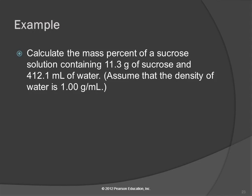So this is the sort of question that involves that particular trick. Calculate the mass percent of a sucrose solution containing 11.3 grams of sucrose and 412.1 milliliters of water. And we're told to assume that the density of water is 1 gram per milliliter. Well, calculate the mass percent. We need the equation.